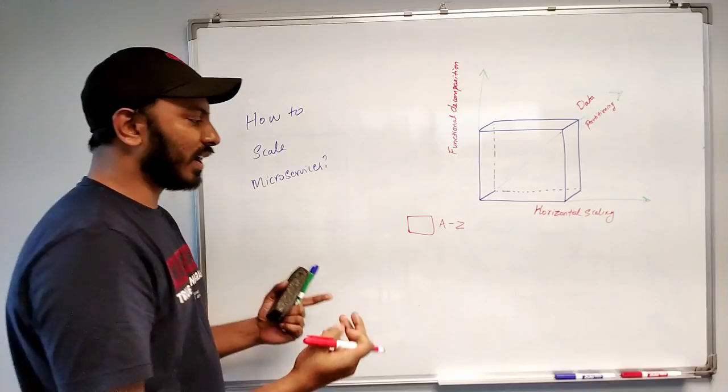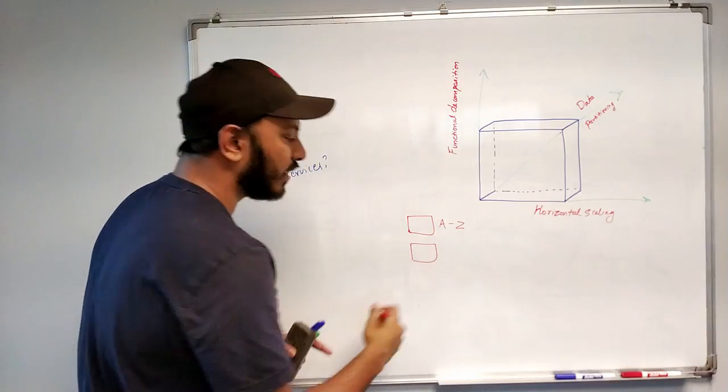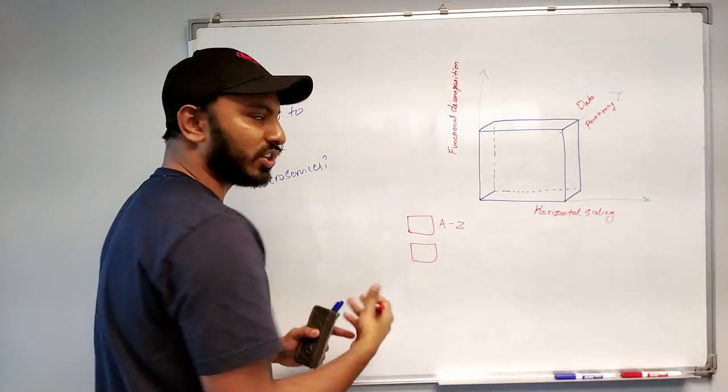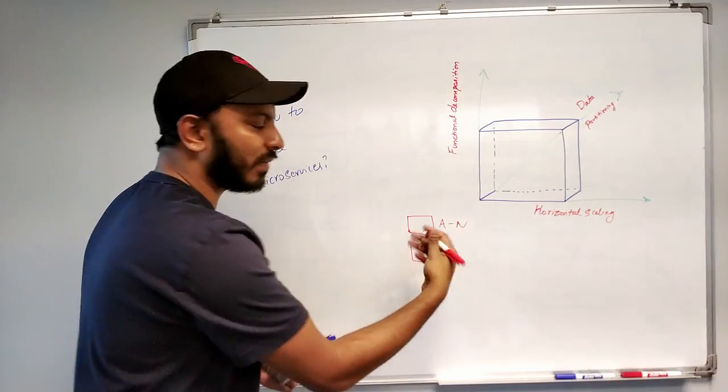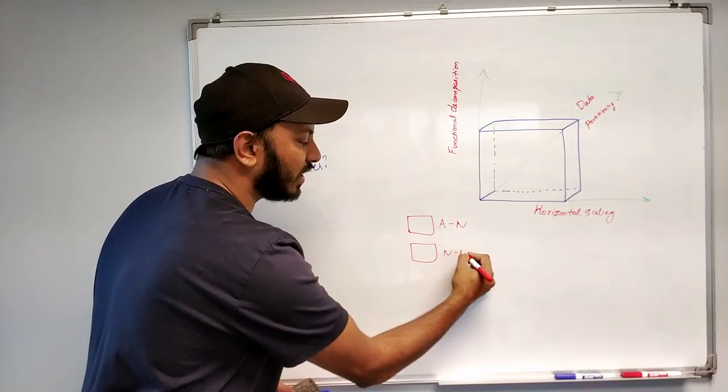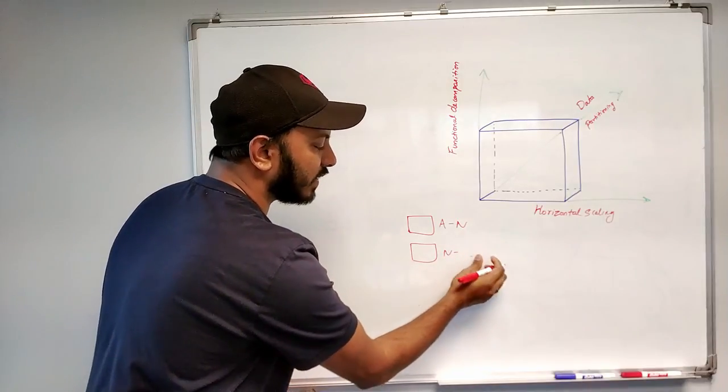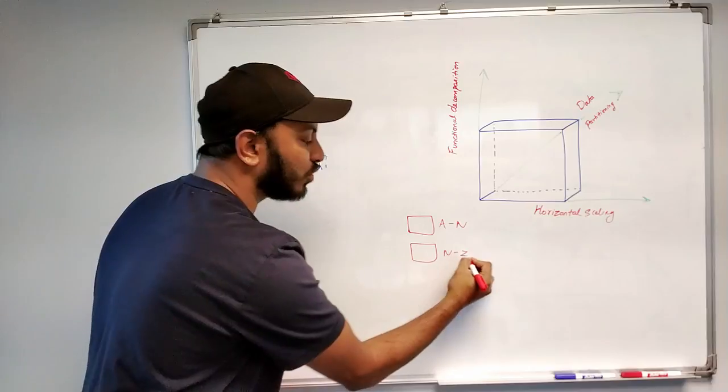Now if you want to scale out, what we can do is add one more server, update the partitioning technique so the first server will basically handle from A to N and the second server will basically handle all the users with names starting with N to Z.